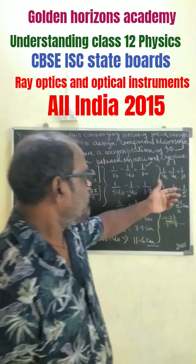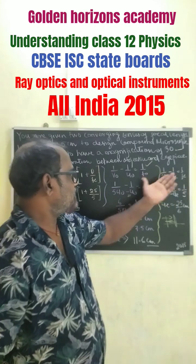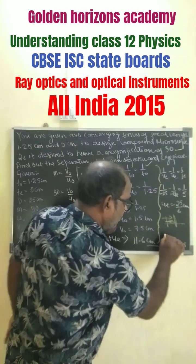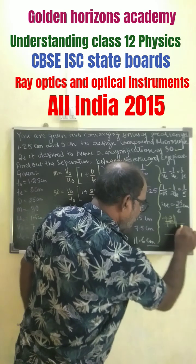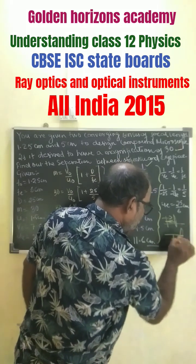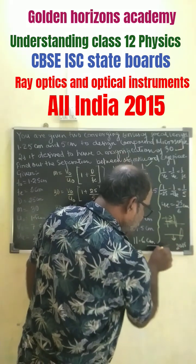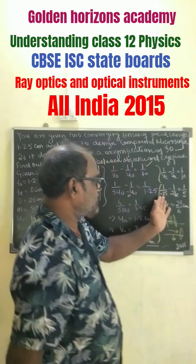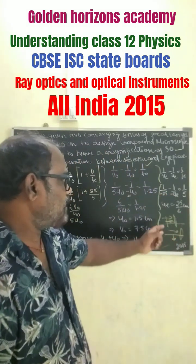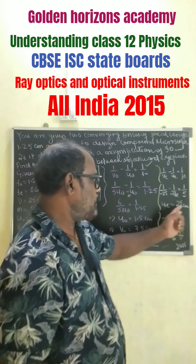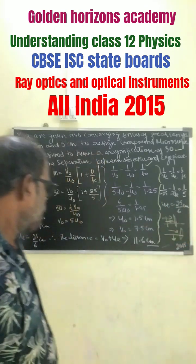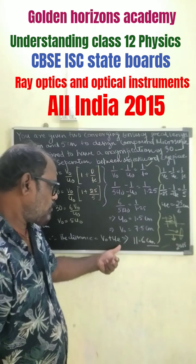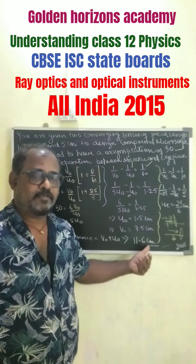Now for the eyepiece, the formula is the same as usual. We know that the image in the eyepiece is formed such that it is a negative sign convention. So we get the final answer U_e equals 1.5 cm. Finally, the total separation distance V₀ plus U_e equals 11.6 cm.